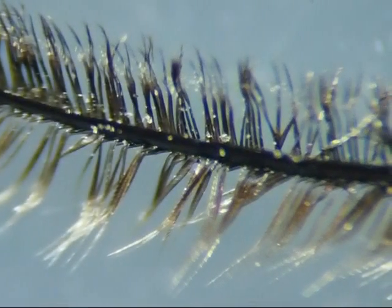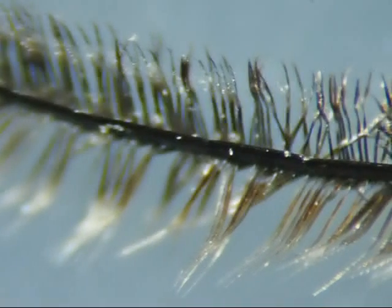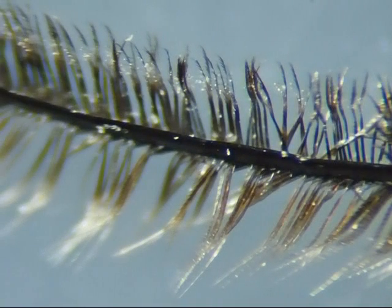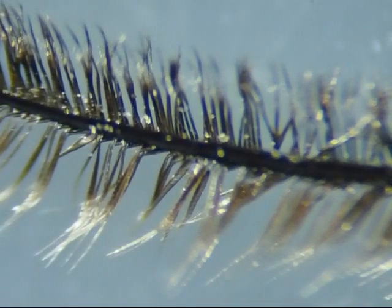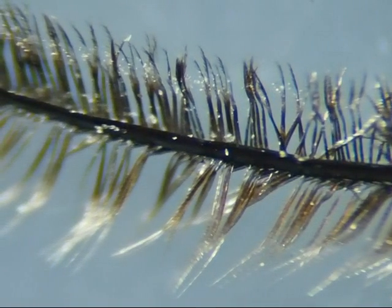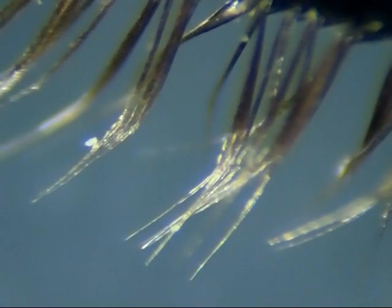To show how the barbs grab each other, I tore off one of the black barbs, which are easier to see than the white barbs, and then rubbed it backwards to spread apart the barbules. Now you can see that the barbules on one side of the barb are different than the barbules on the other side.